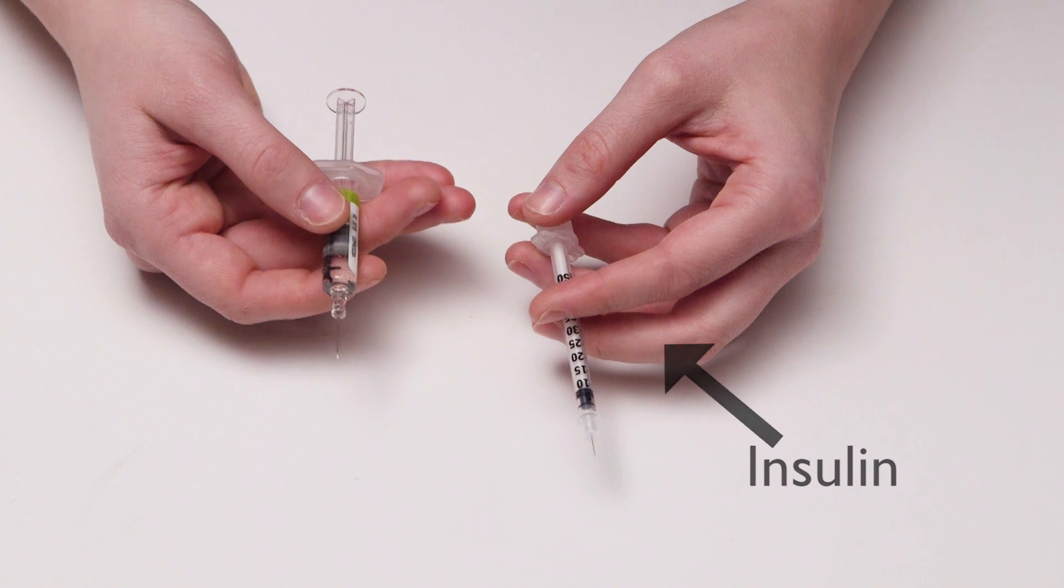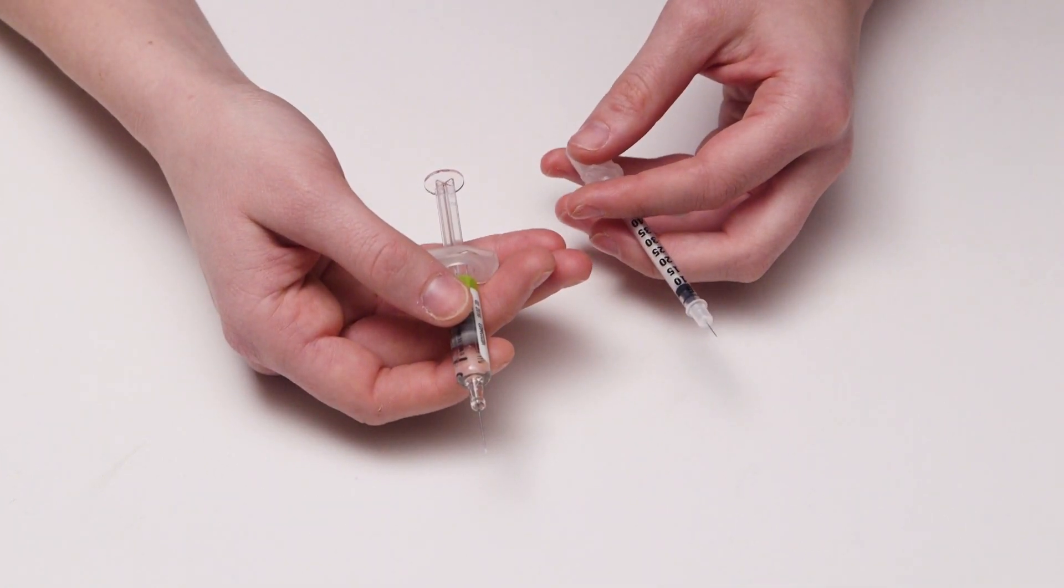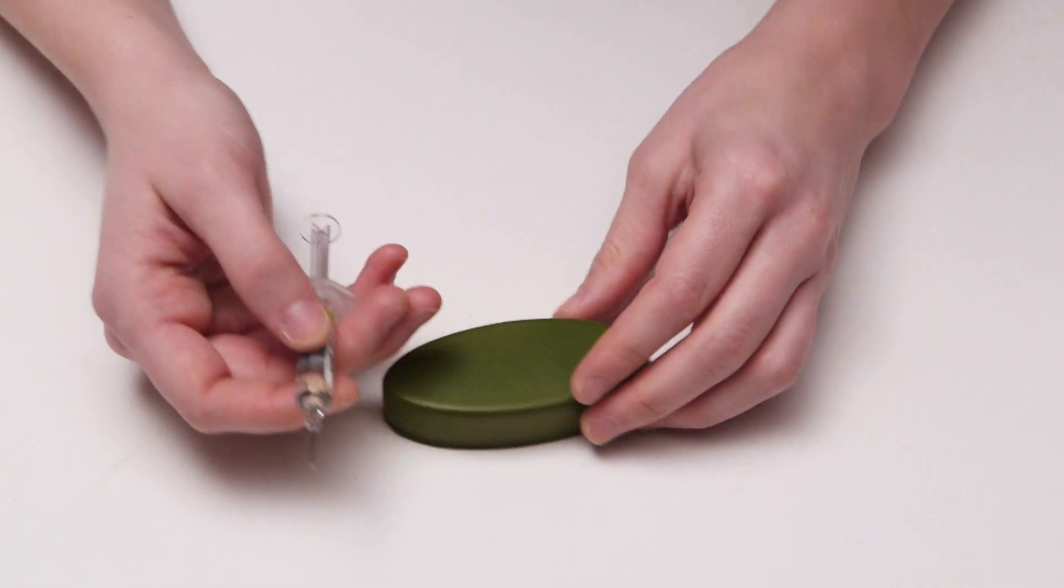Unlike an insulin injection, the glucagon injection is an intramuscular injection, much like epinephrine. This means that you have to use some force when giving the injection.